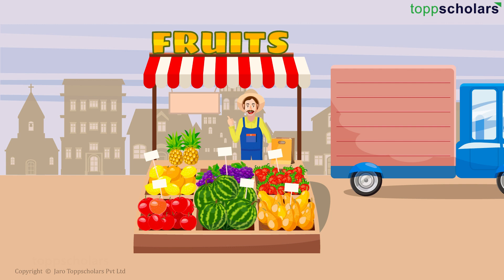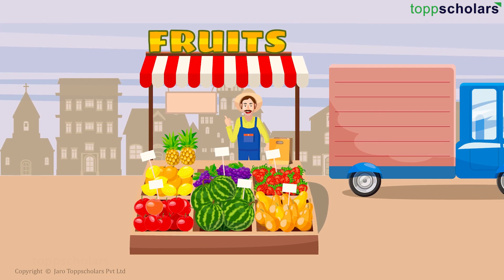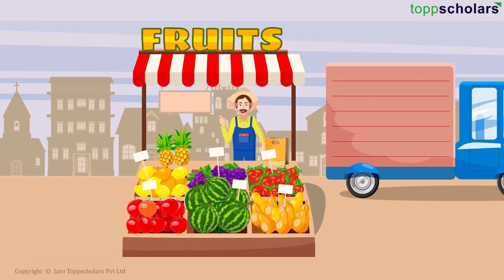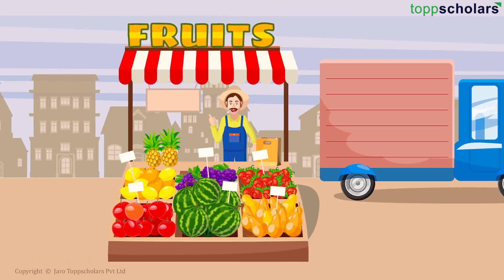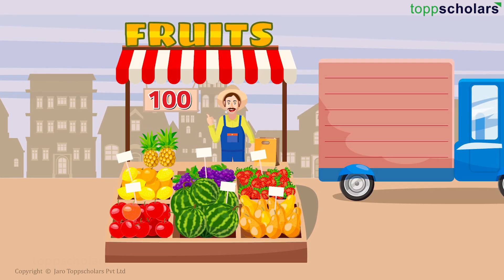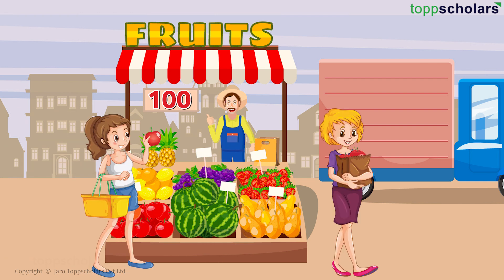Let us take a real-life example. If we are going to a fruit seller to buy some apples — the apple costs 100 rupees per dozen, and different people come in: some take one dozen, others take two, three, or four dozens depending on their requirement. Now the shopkeeper says that whatever amount of apple a person takes, he will charge 20 rupees for the carry bag.